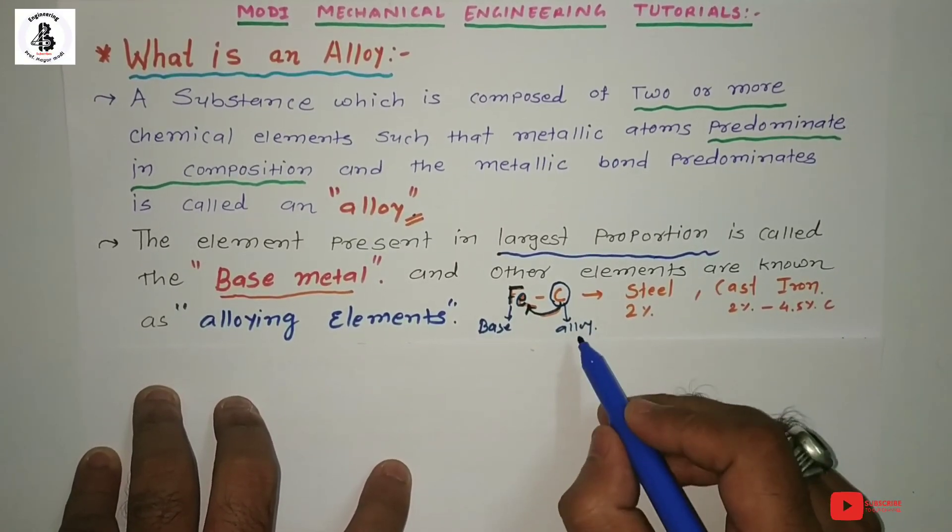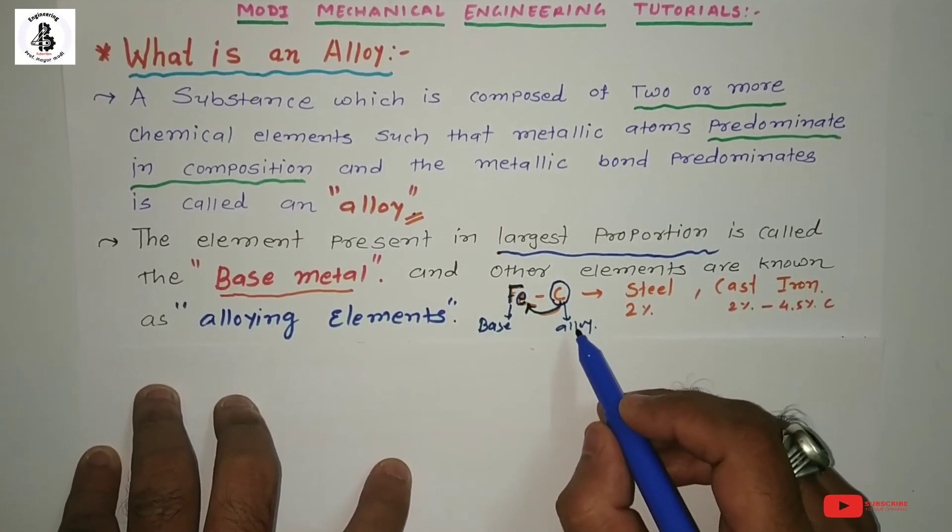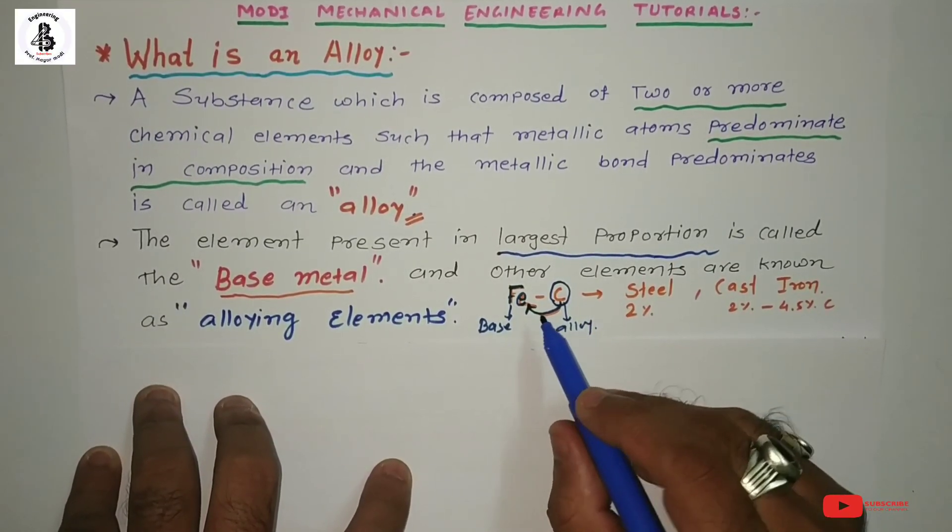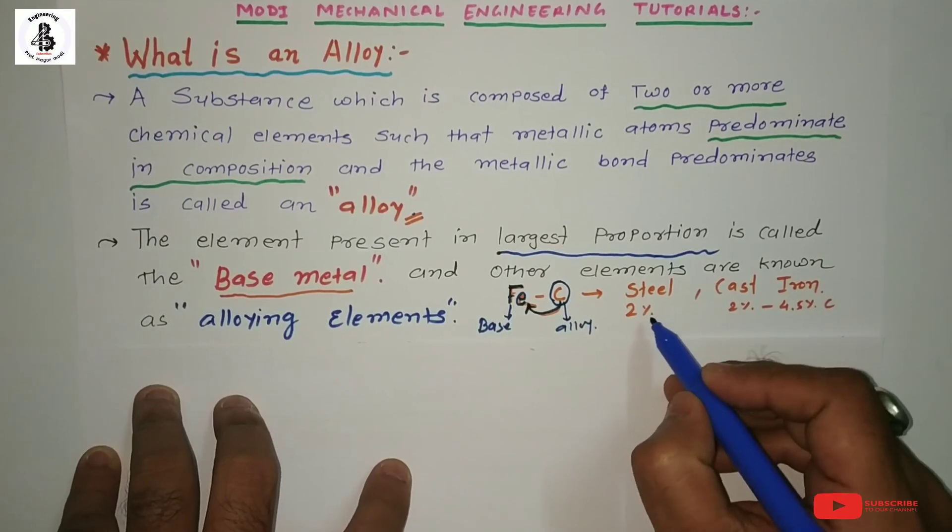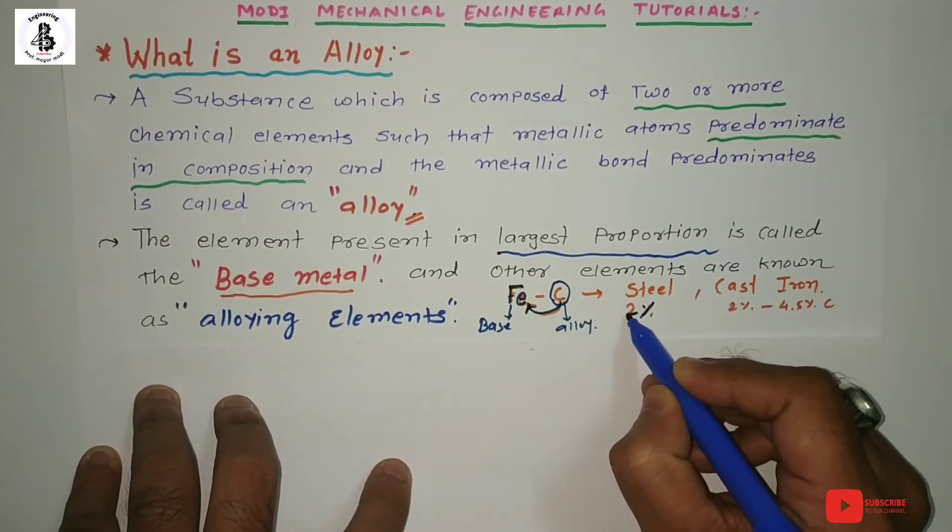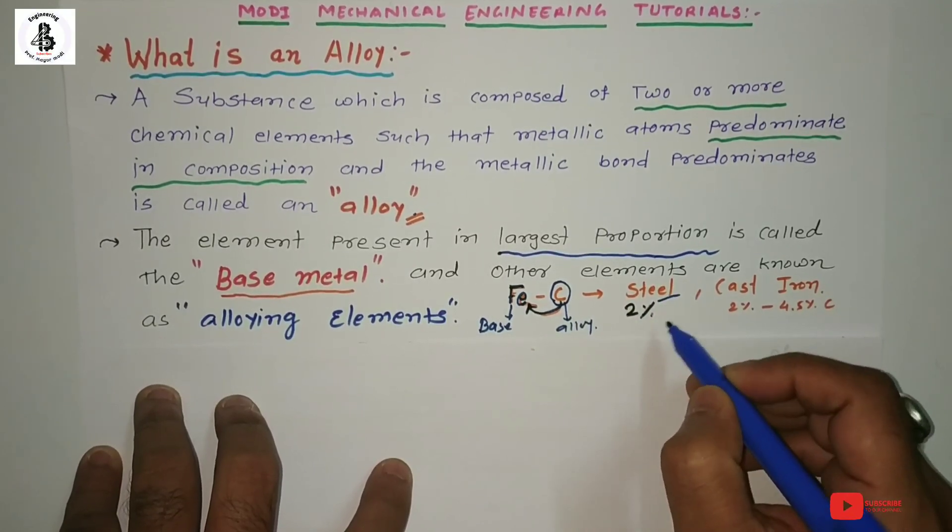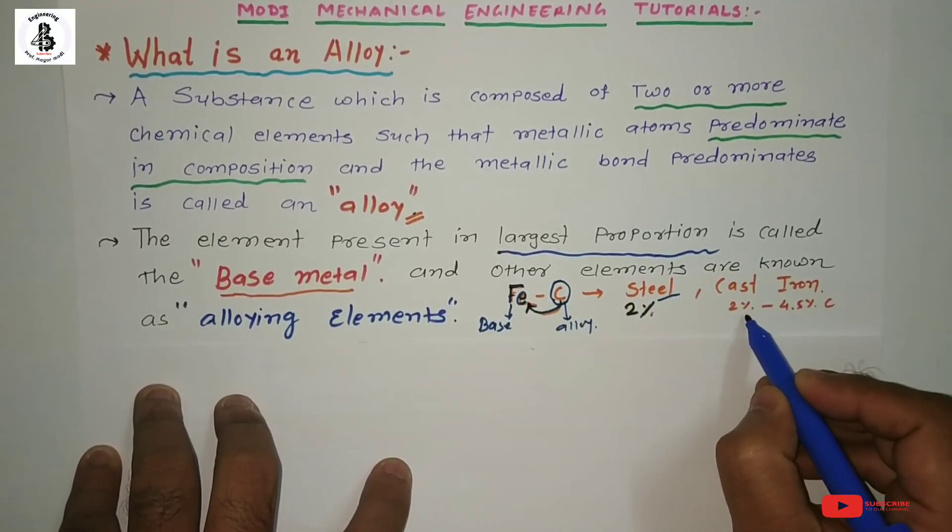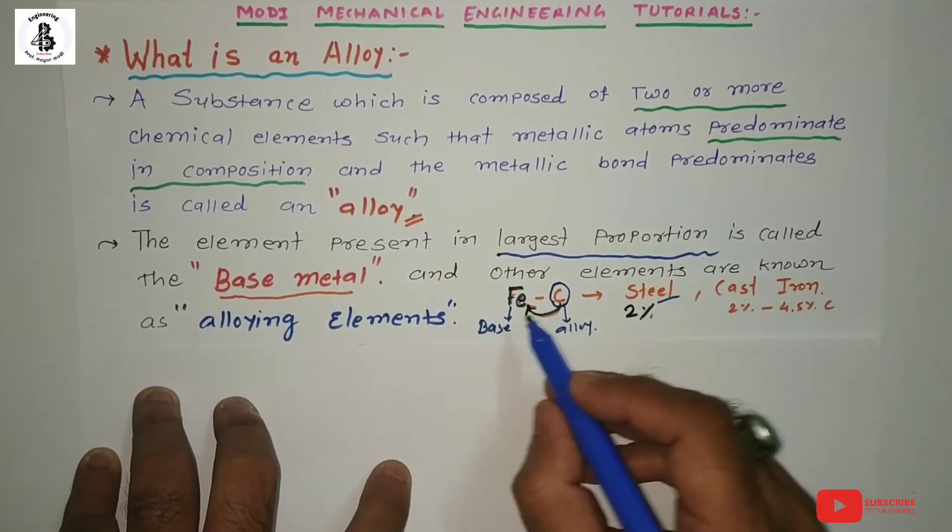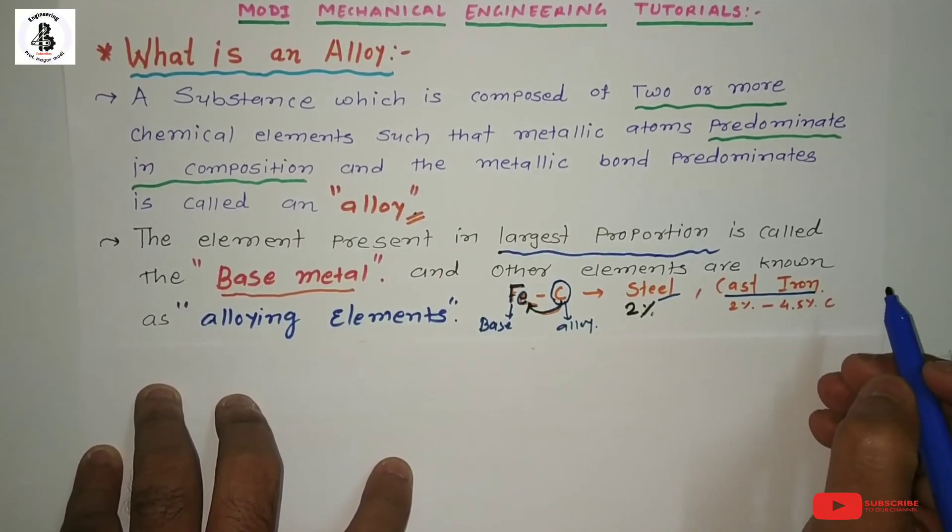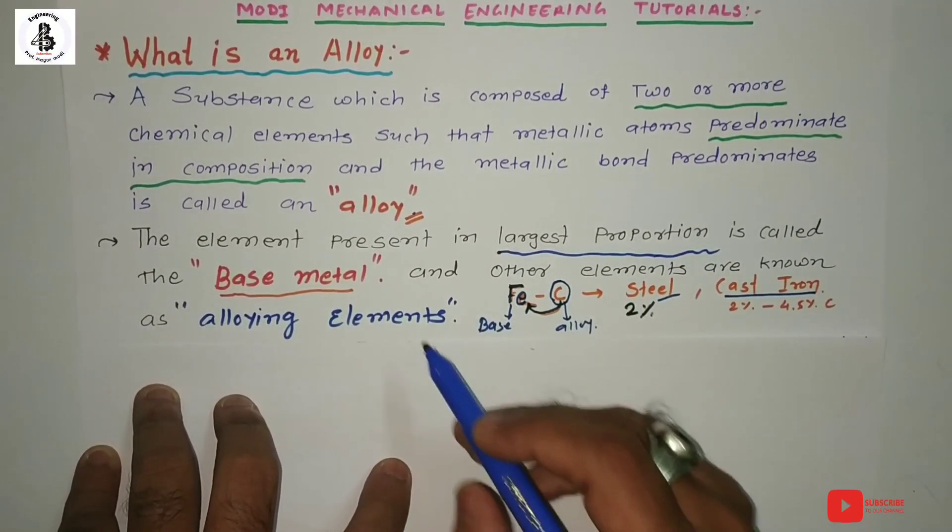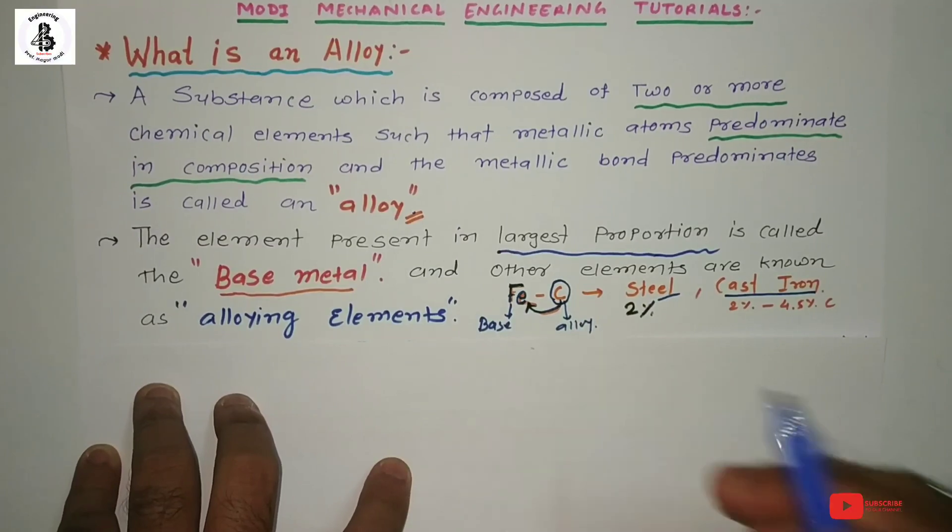By the addition of such alloys, it will have high affinity power to change the materials. If it is up to two percent, it has the ability to form steel. If it is more than two percent to maximum four point five percent carbon into iron, it forms cast iron. That is the basic difference between base metal and alloying element.